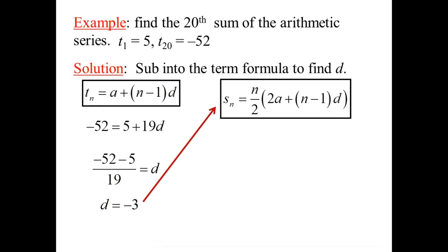Now, we'll use the sum formula to find the sum of the series. That'll be easy to do because now we have D and we have A, the first term, and we know what N is because we want the 20th sum. So, just plug all the numbers in and evaluate. 20 over 2, of course, is 10. 2 times 5 is 10. 20 minus 1 is 19 times minus 3. And there we have it.